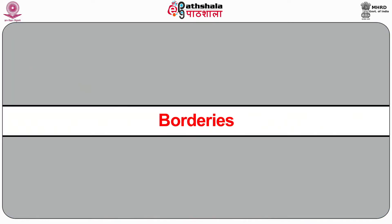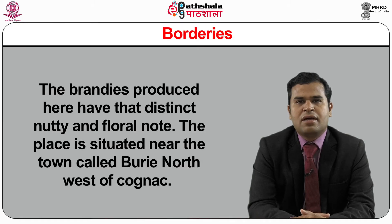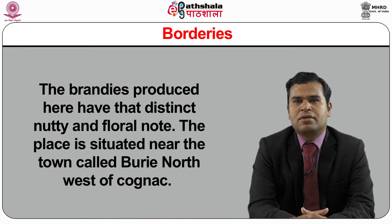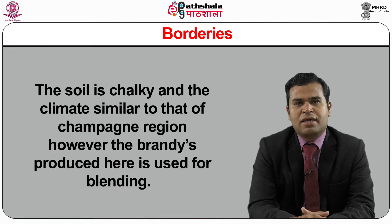Petite Champagne is another region for producing Cognac. The Cognac produced here is quite similar to that produced in Grand Champagne, with a difference in microclimate, though the soil is also similar. The brandies produced in the next region have a distinct nutty and floral note. The place is situated near the town of Jarnac, northwest of Cognac. The soil is chalky and the climate similar to that of the Champagne region.